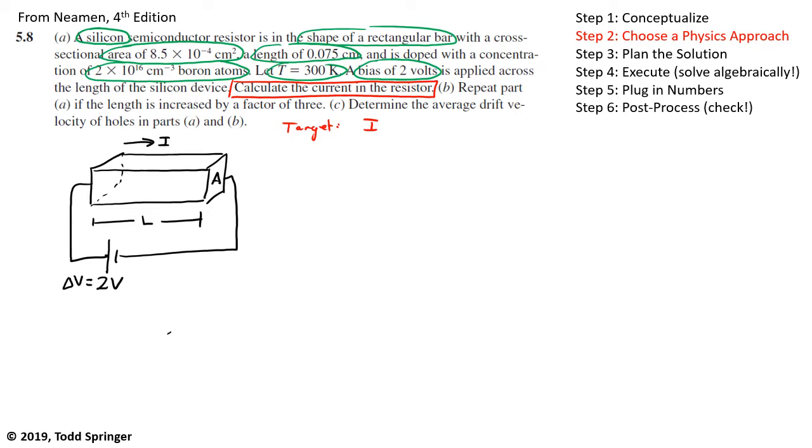So as I drew this little sketch here, the 2-volt is applied between the left and the right side of that bar, causing a current to flow from left to right. And the target variable in this problem is that current I. What is the current in this semiconductor? So we're trying to determine the current. We know the voltage delta V applied across this semiconductor. Of course, the equation which relates the current to the voltage applied is Ohm's law. Delta V is equal to I times R. And we know delta V. And we know that's 2 volts. The current is what we're trying to find. But we don't know the resistance.